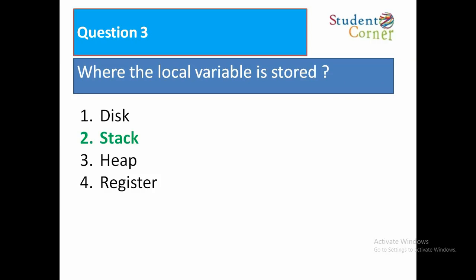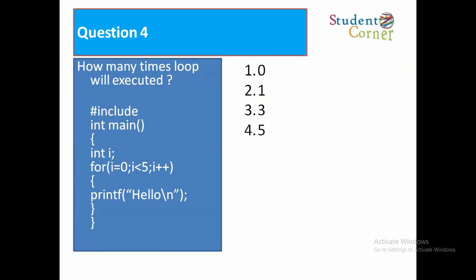Question number four: How many times will the loop be executed? Hash include, int main, int i, for i equals 0, i less than 5, i plus plus, printf hello. It will move five times.